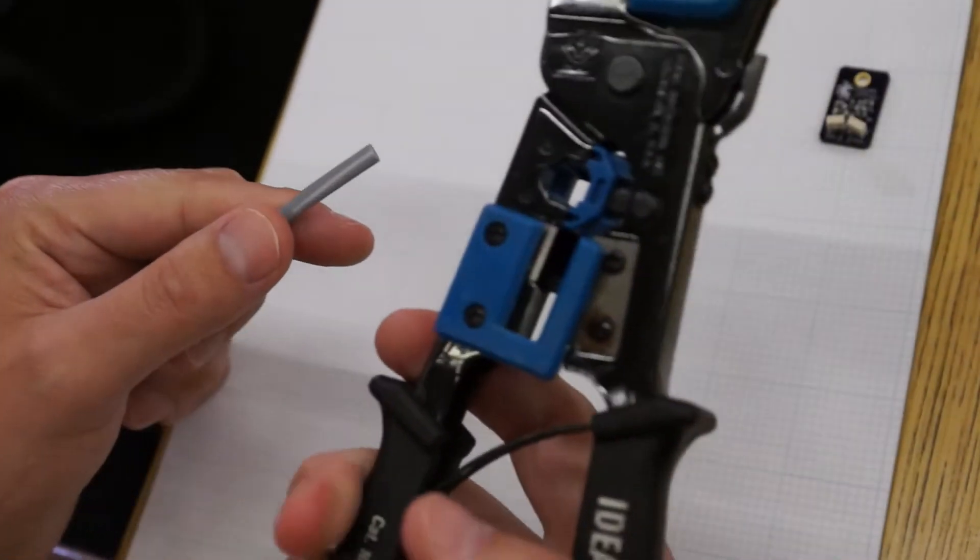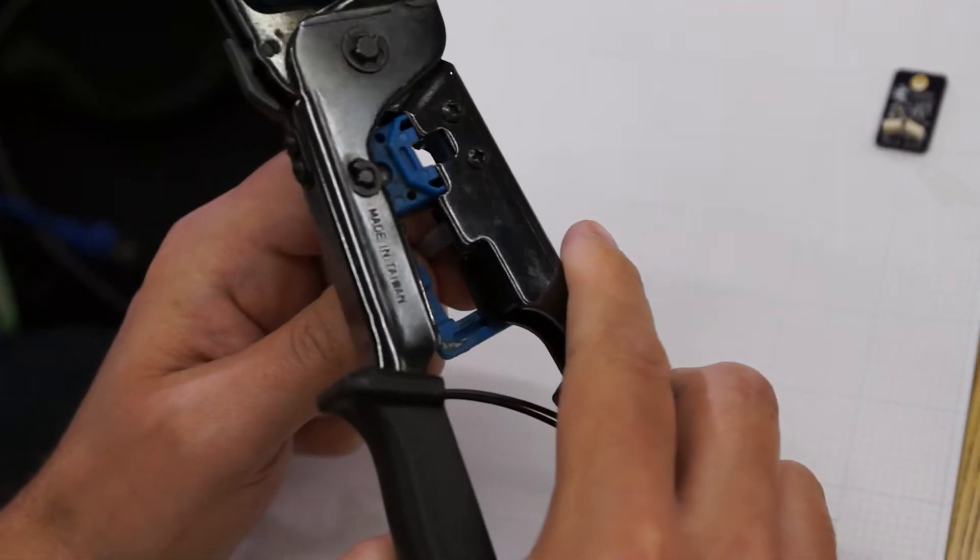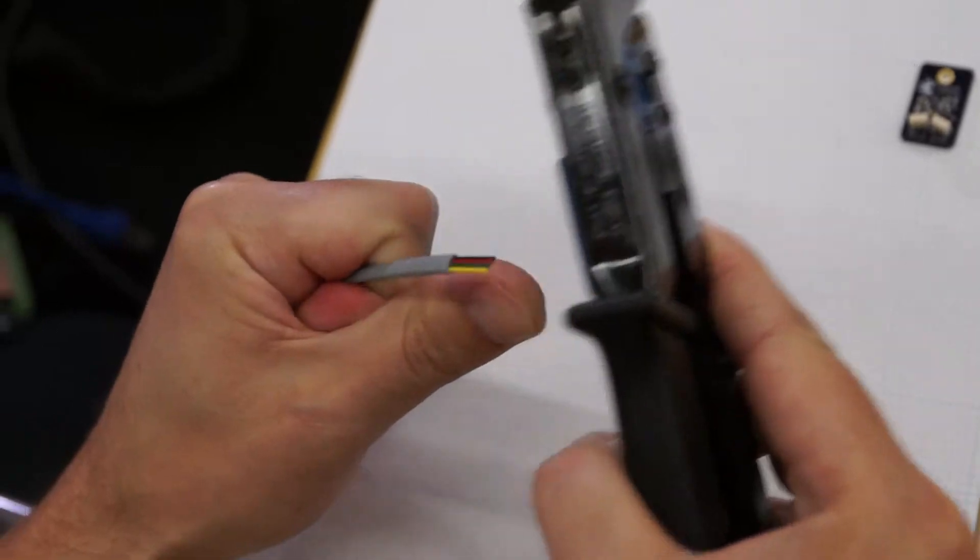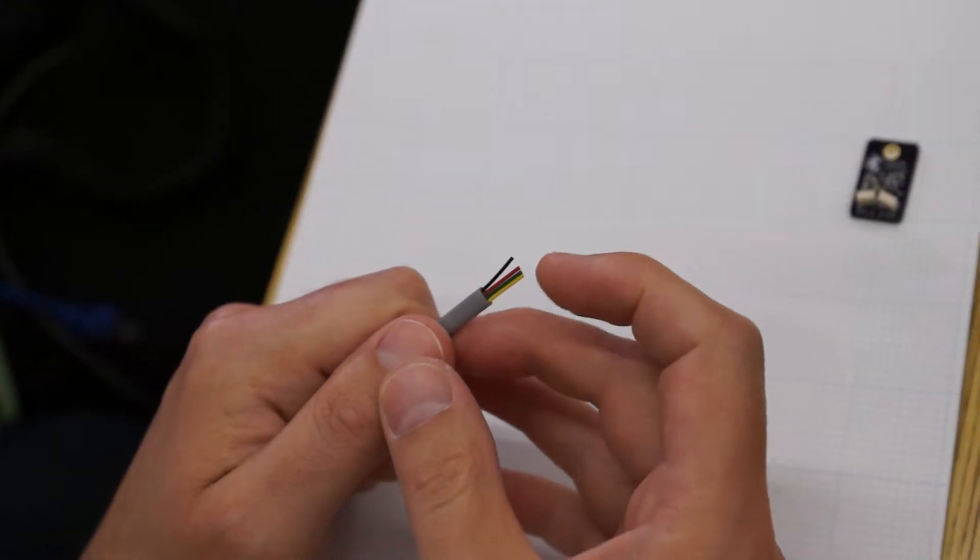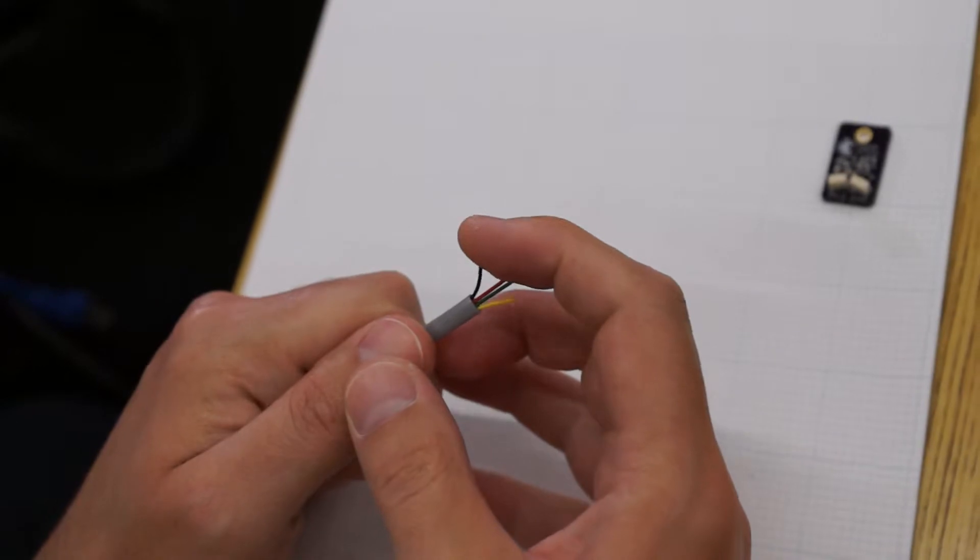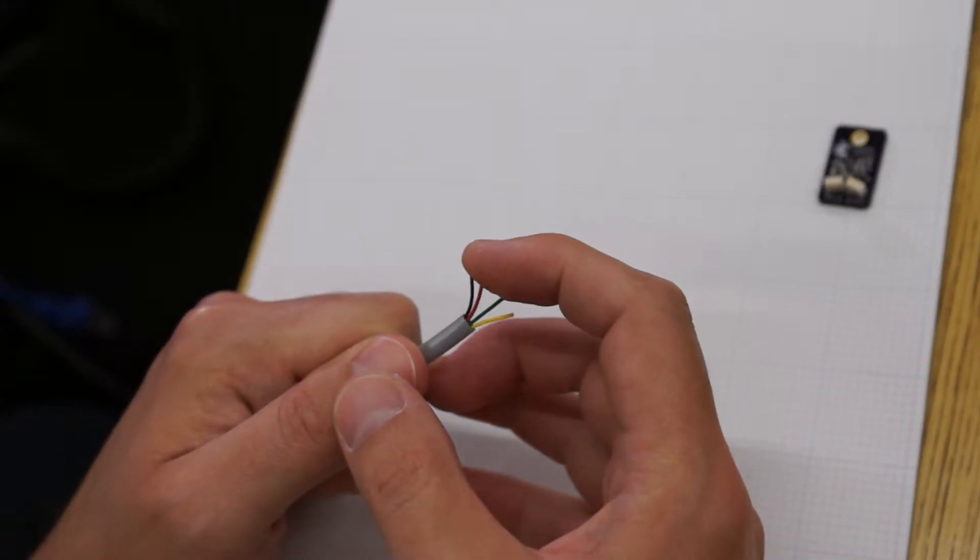use a telephone crimp strip tool and strip the wire on the long setting, which will expose about a half inch of wire. The actual internal wires are not stripped, just the outer jacket.